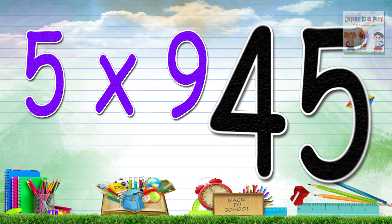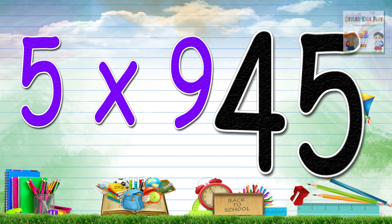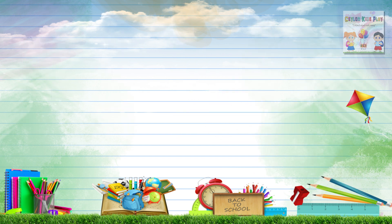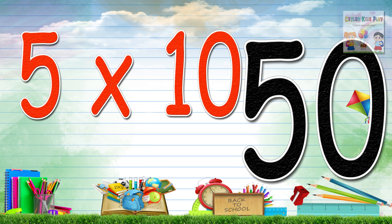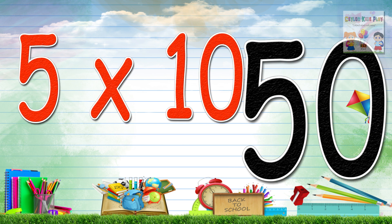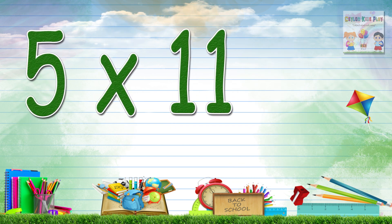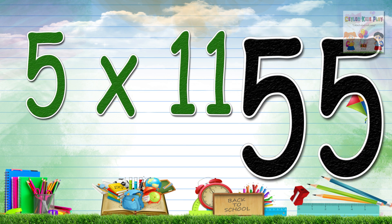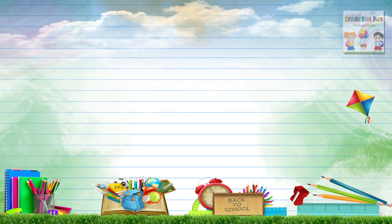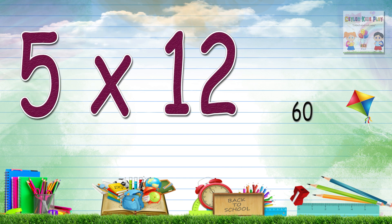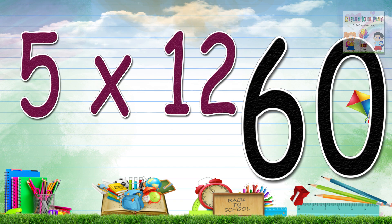Five by nine, 45. Five by ten, 50. Five by eleven, 55 — aisra keko laha, aaspahai. Five by twelve, 60 — asra do laha, hetai.